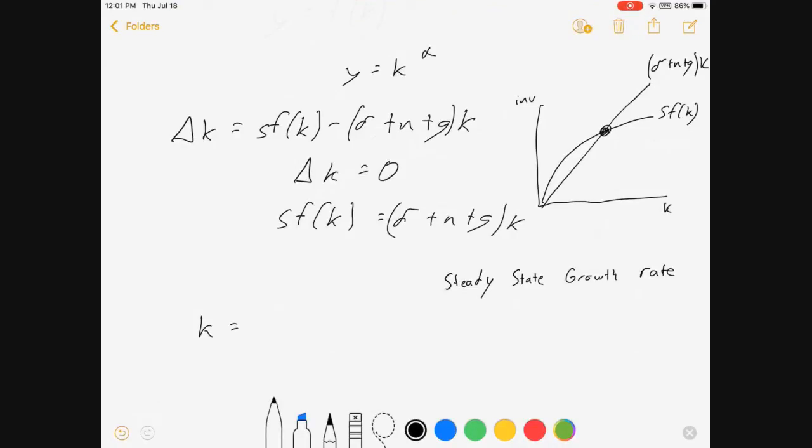If we look at capital per effective worker, which is k equals K over E times L, this thing has a steady state growth rate of zero.